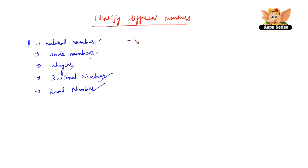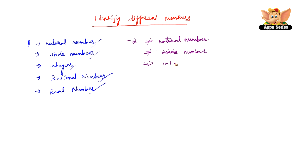Let us take minus 2. Minus 2 is not a natural number, it is not even a whole number, but it is an integer. And all integers are rational numbers, and all rational numbers are real numbers.